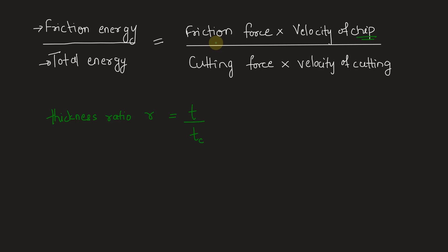But the thickness ratio R, given as uncut chip thickness T upon nominal chip thickness Tc after the cut, can also be written in terms of velocity as Vc by V, where Vc is velocity of chip and V is velocity of cutting.